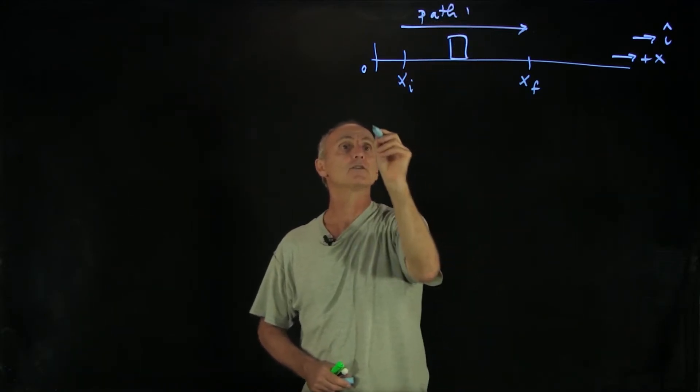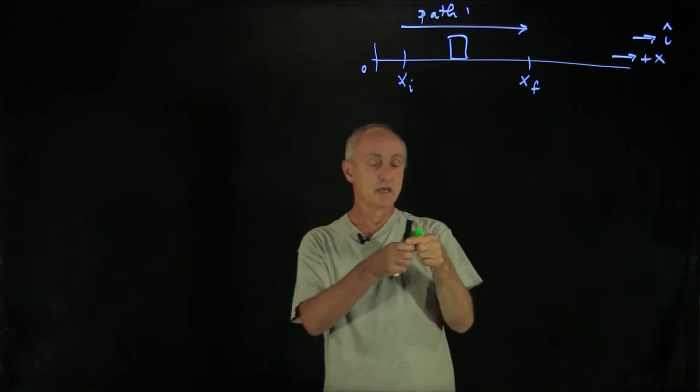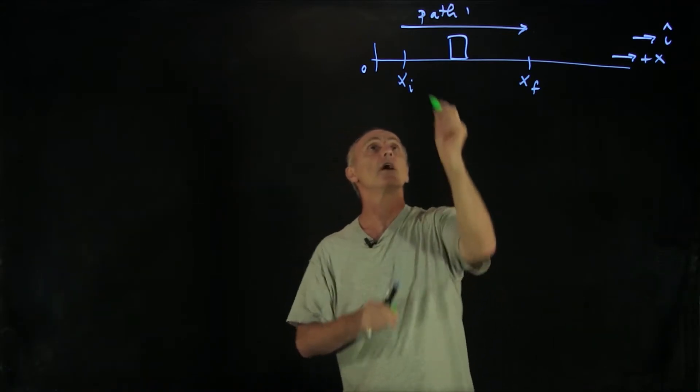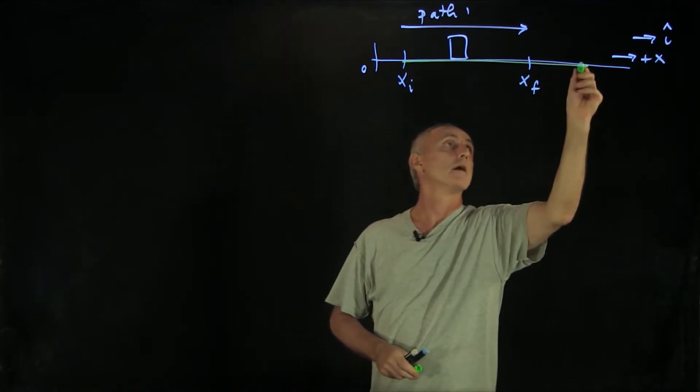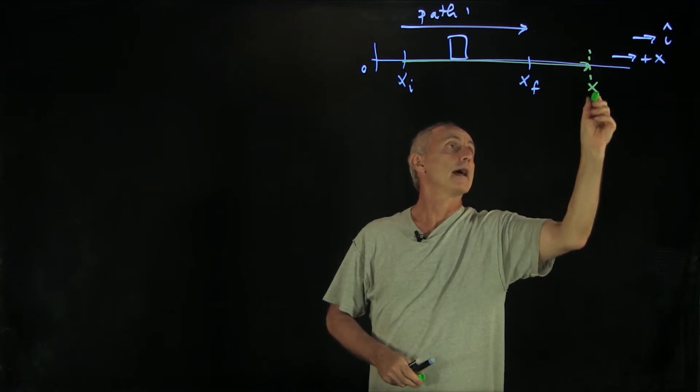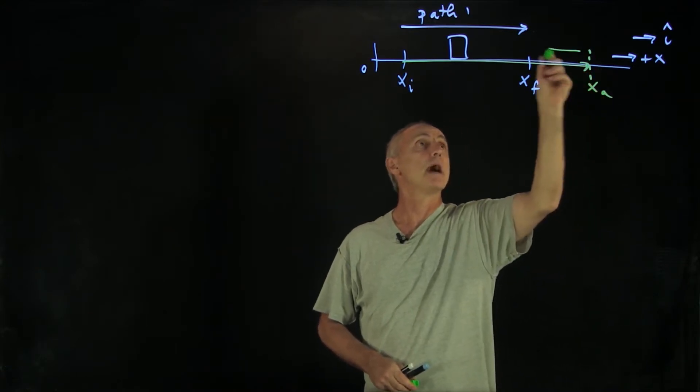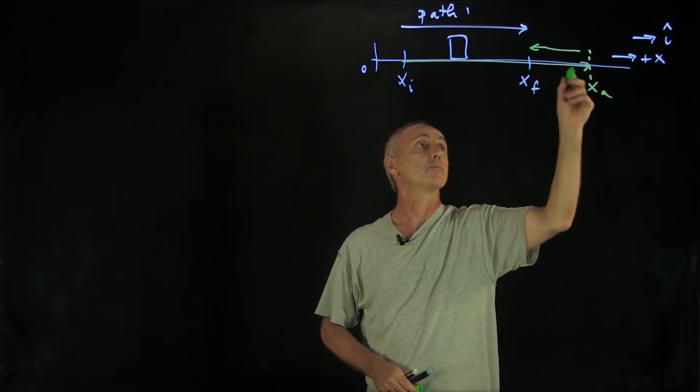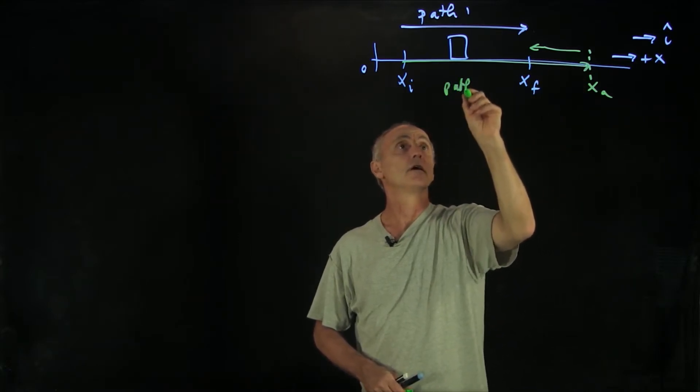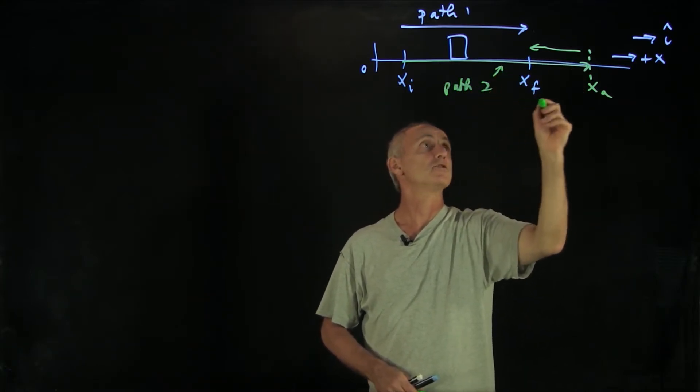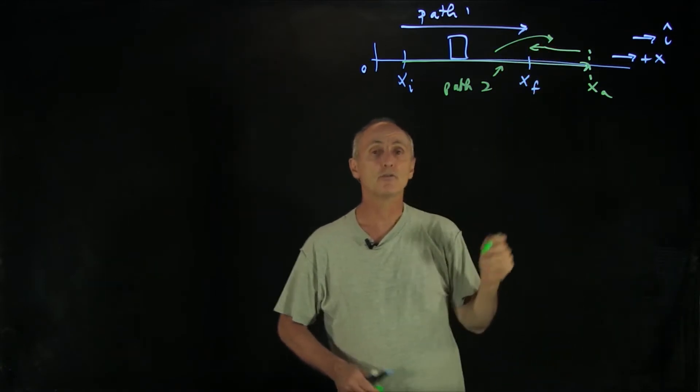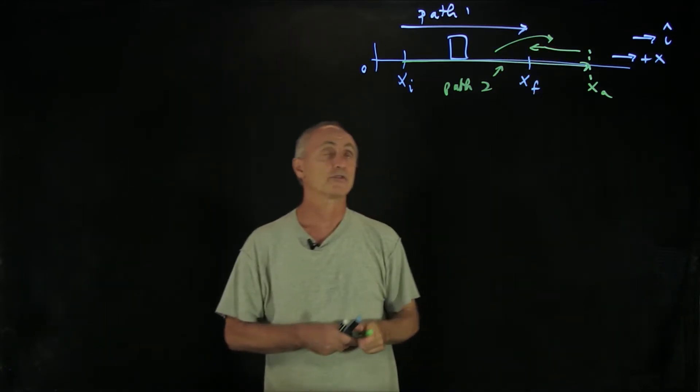In our second case, we'd like to move the object out to a point x_a, and then back to the final point. So this is our path two, has two legs. And we'd like to compare the work done on these two paths.